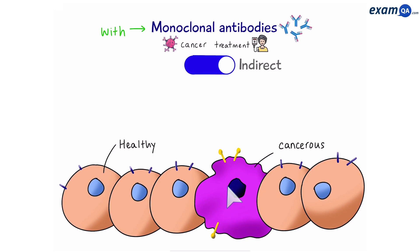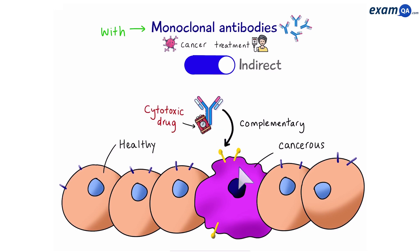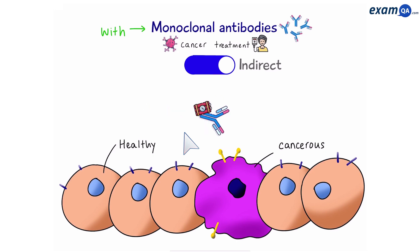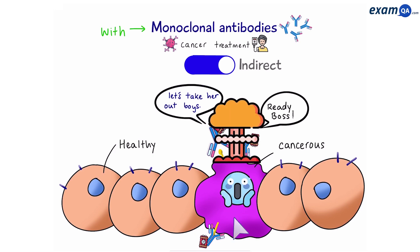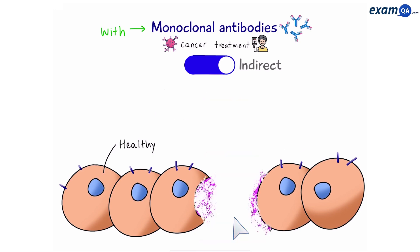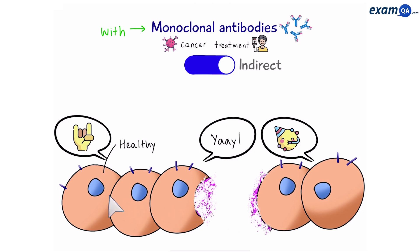Now let's look at what happens indirectly. We take an antibody that is complementary to the cancer cell and load it up with a cytotoxic drug. This drug will only target the cancer cell, unlike before where it killed all cells. Once the drug binds to the cancer cell, it will deliver a lethal dose that destroys the cancer cell, leaving the healthy cells relatively unharmed.